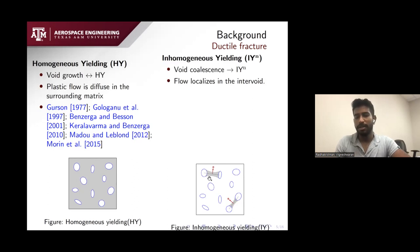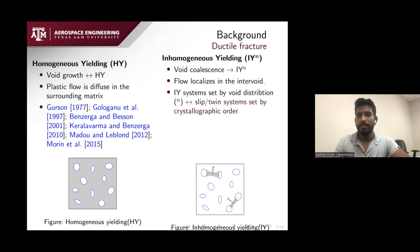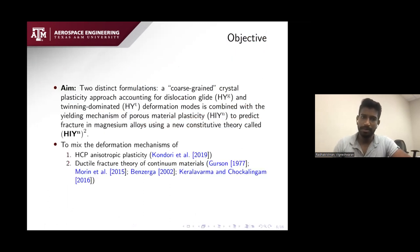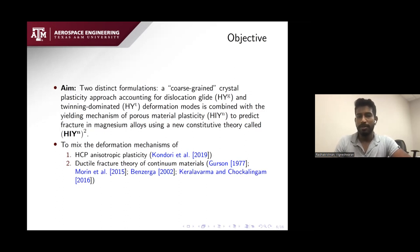If inhomogeneous yielding is occurring, there can be a variety of systems — just like in crystal plasticity where slip or twin systems are set by crystallographic order, here the distribution of voids in the matrix sets the highway systems. These kinds of models had their origin since 2002, with a recent model by Kerala Runga and Chokalingam in 2016. The aim is to combine crystal plasticity or the reduced order models of Babak Kondari with ductile fracture theory such as the Gurson model plus void coalescence models.